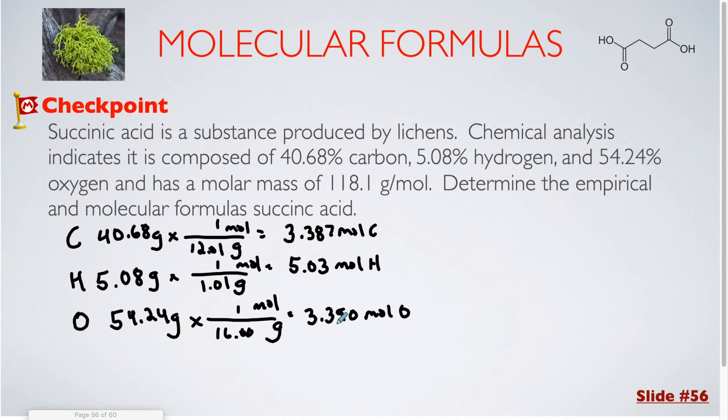While these two are very close, the smallest number is the value of the carbon. So I'm going to divide all of these by the 3.387. The carbon comes out to exactly one. The oxygen is essentially one. So we'll call it one. And the hydrogen comes out to 1.5.